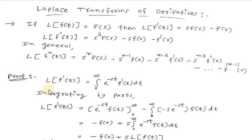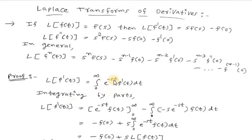So it becomes Laplace of f'(t) equals integration from 0 to infinity of e^(-st)·f'(t) dt. Now we will integrate this function using integration by parts, taking e^(-st) as u and f'(t) as v. So e^(-st) stays as is and integration of f'(t) gives f(t), with limit 0 to infinity.